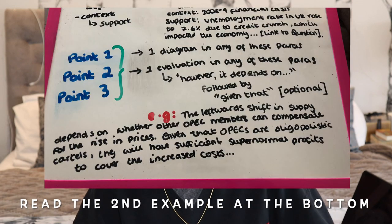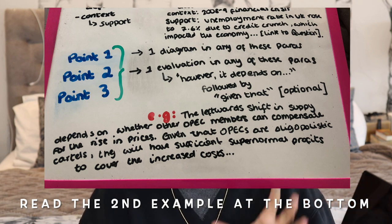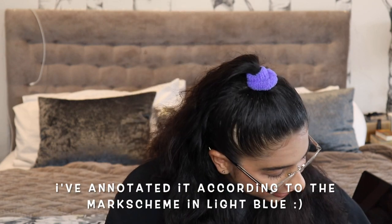It won't necessarily guarantee more marks as such, but it shows overall you have sound economic knowledge and understanding, and that itself shows the examiner you deserve the best marks. When saying 'however it depends on,' you want to say 'given that' — so: 'however this might depend on X given that in the current economy this is happening, this might not have this big a consequence.' That 'given that' part is essentially context of current affairs. And finally, make sure you have one diagram — one is sufficient.